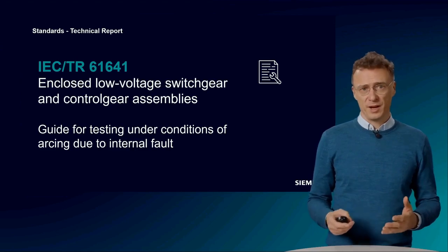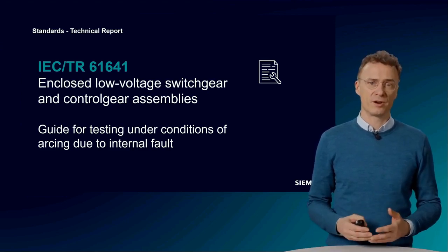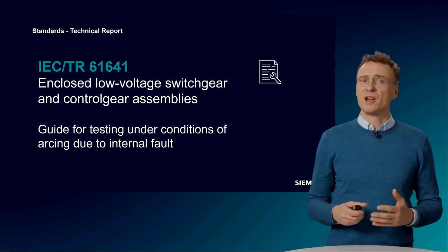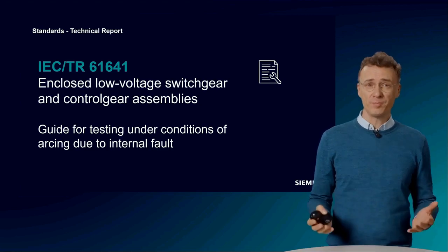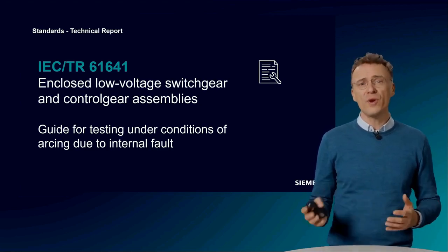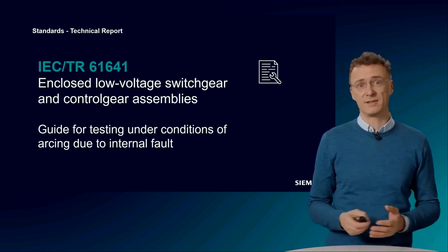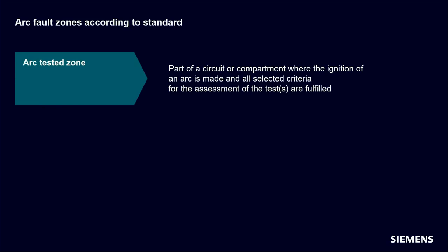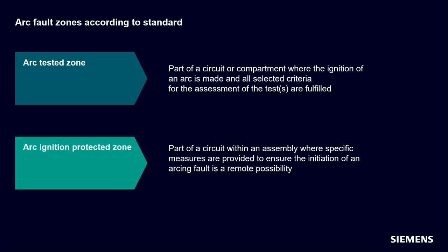The test parameters include voltage, currents, and the burning time of the arc, as well as who has access to the assembly — unrestricted access (everyone) or restricted access (only authorized personnel). The proof of arc fault protection can be carried out in two different ways: by testing, resulting in an arc-tested zone, or by taking appropriate measures that make the occurrence of an arc fault unlikely, resulting in an arc-protected zone — achieved, for example, by insulating conductors. In a switchboard, you will usually find a combination of both.